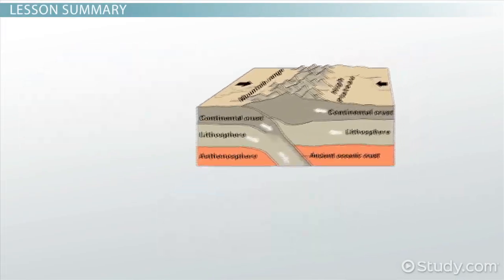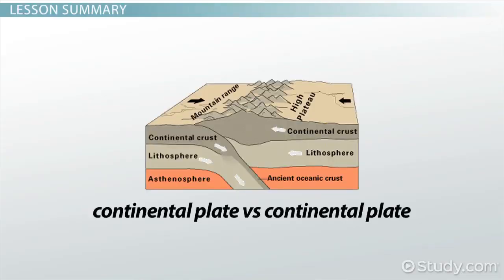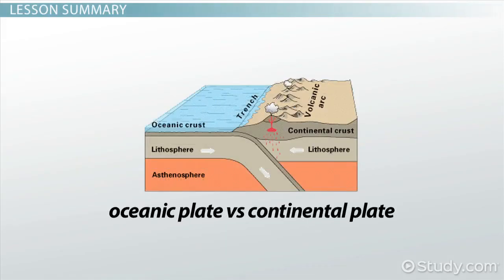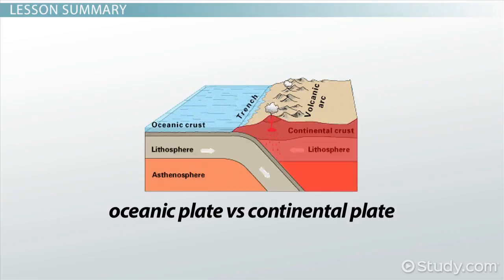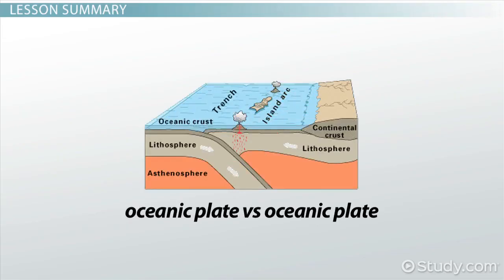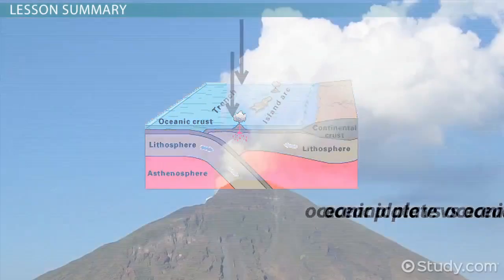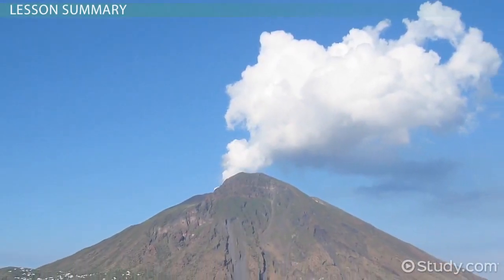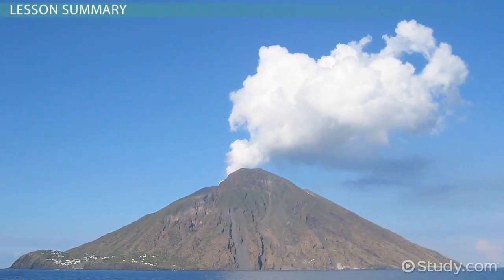The main features of subduction zones include ocean trenches, volcanoes, and mountains. Earthquakes also happen as a result of these collisions. When two continental plates collide, the land is broken and pushed upwards, creating mountain ranges. When an oceanic plate collides with a continental plate, the denser oceanic plate subducts beneath the less dense continental plate, resulting in a trench under the sea on the oceanic side and volcanoes or mountains on the continental side. When two oceanic plates collide, they produce oceanic trenches and underwater volcanoes, which can ultimately form islands — and many of the islands in the Pacific were created this way.